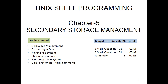Unix shell programming Chapter 5: Secondary Storage Management. In this chapter, we are going to understand how the secondary memory is managed in the Unix operating system. We will also know about how the disk space is managed, what are the formatting features of disk, how do you make a file system, how do we check the disk space, how do we mount and unmount a file system, what do you mean by disk partition, and how we can achieve disk partitioning using the fdisk command.